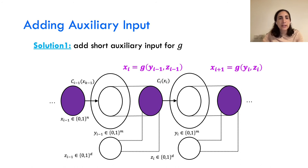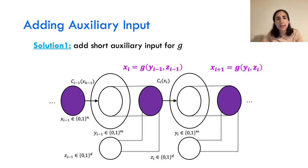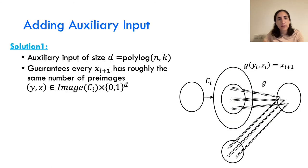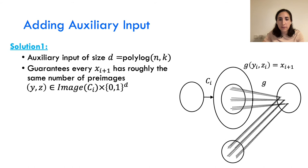The solution is to add a short auxiliary input to G. We add auxiliary input z_i of size polylogarithmic. G now maps (y_i, z_i) to the next circuit's input. This auxiliary input guarantees that each x_i has roughly the same number of pre-images, which also helps in the subsequent analysis.